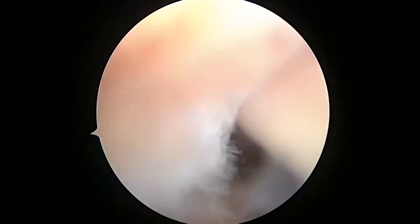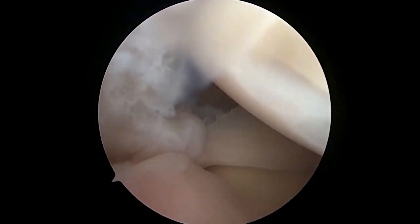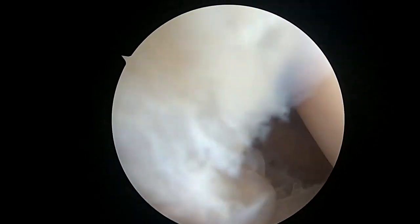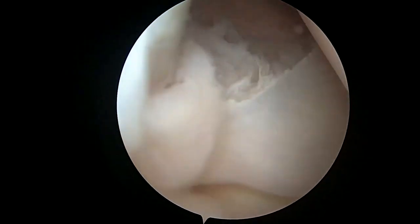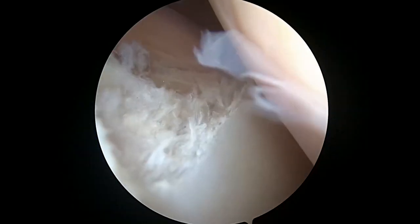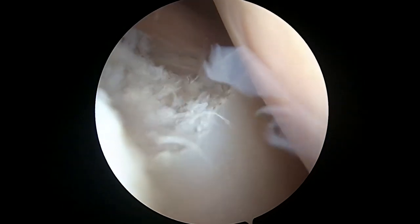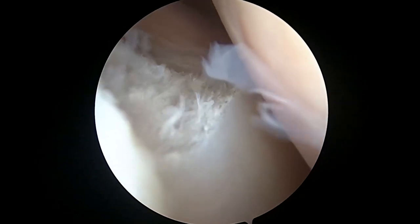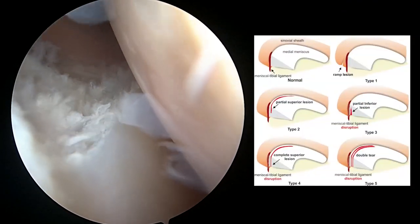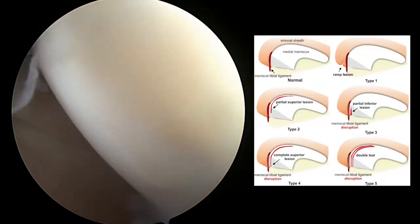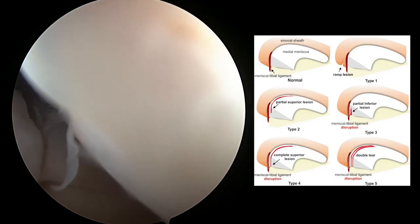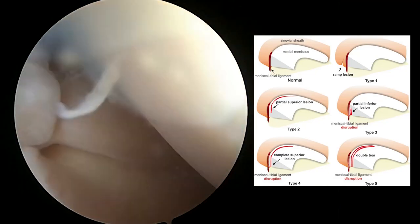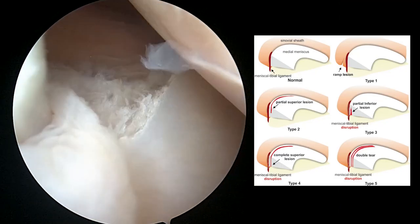This really highlights the importance of, in all ACLs, driving into the posterior medial aspect of the knee and looking for ramp lesions. We're going to take our shaver first and do this in all cases, but especially chronic cases, to stimulate healing. We know that ramp lesions are more frequently seen in chronic ACL injuries.